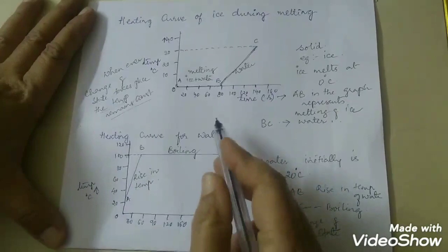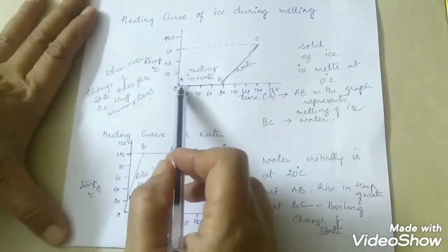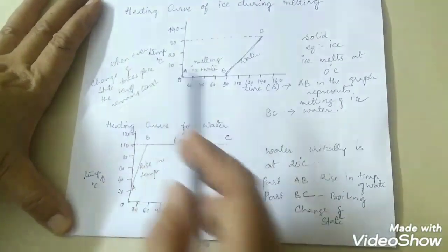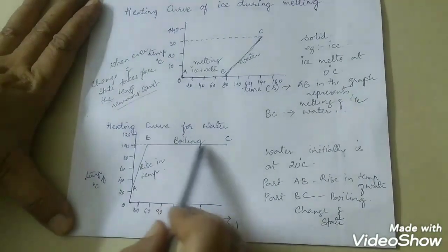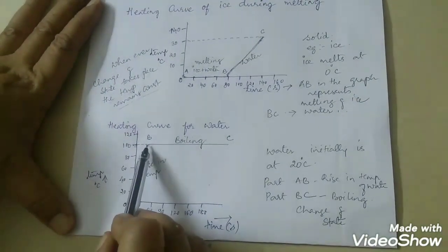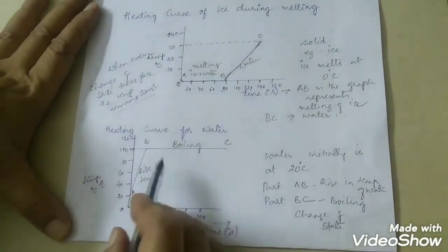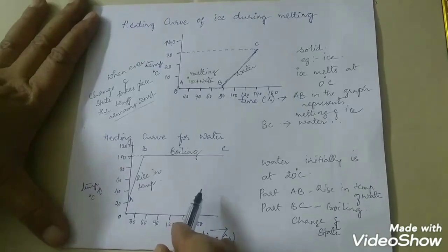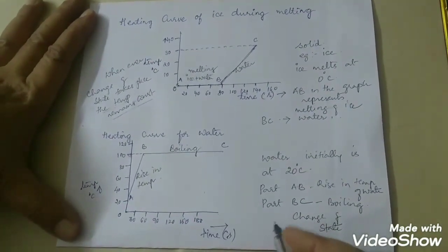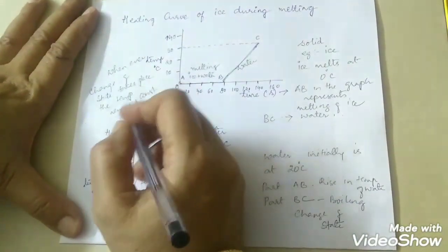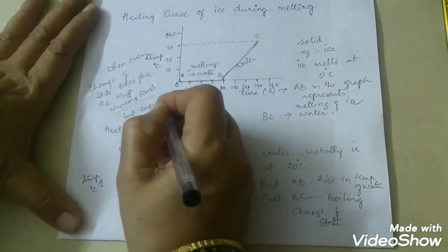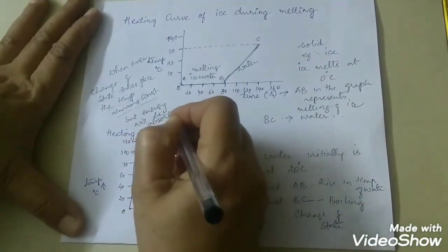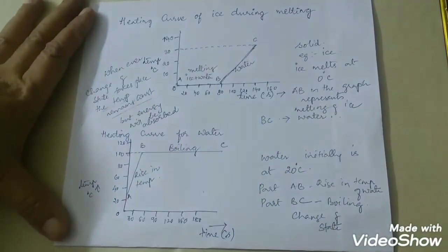From these two graphs, the conclusion is: if you take the heating curve of ice, as long as there is change of state, the temperature remains constant. When ice melts and is converted into water, the temperature remains constant. Similarly, when water starts boiling and is converted into steam, the temperature remains constant. From both graphs we can infer that whenever there is a change of state taking place, the temperature remains constant even though heat energy is absorbed by the substance. During change of state, the temperature remains constant but heat energy will be absorbed. This is about the heating curve of ice and water.